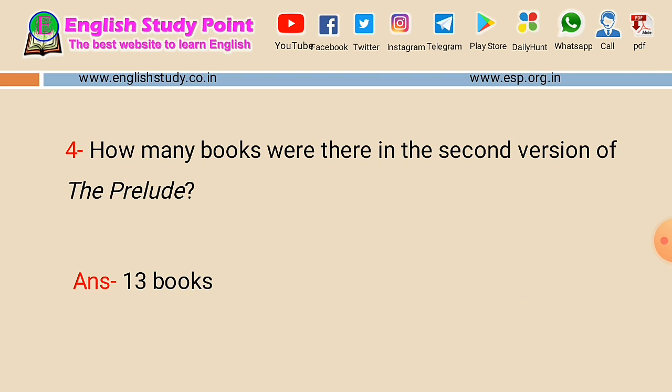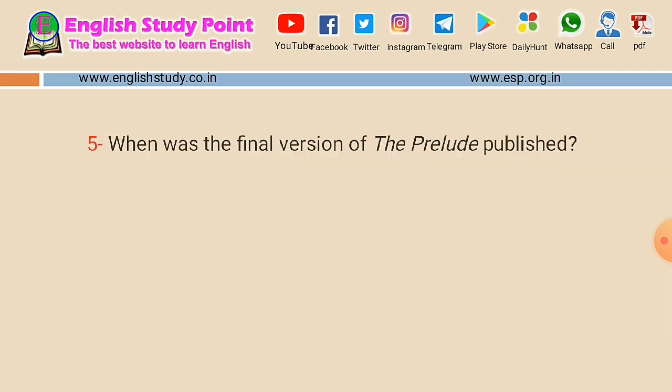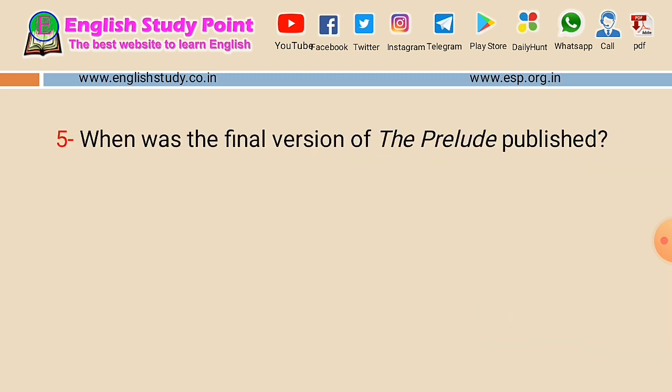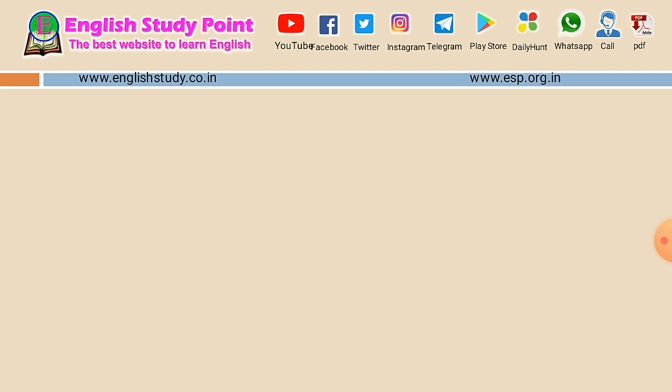Question number five: when was the final version of the Prelude published? I have already asked about the first and second versions; this question is about the final (third) version. The answer is 1850.